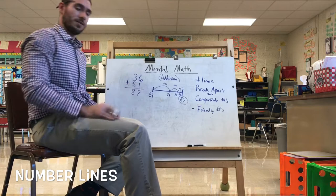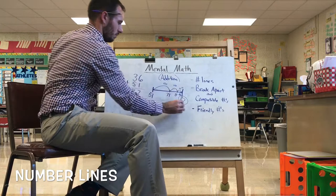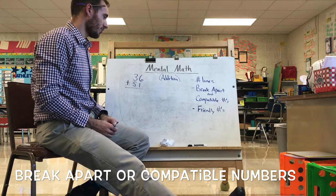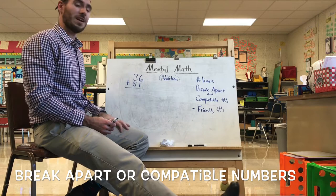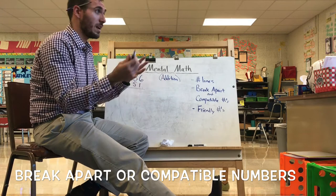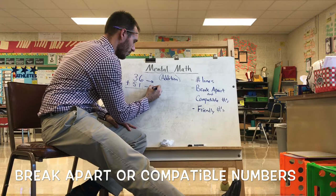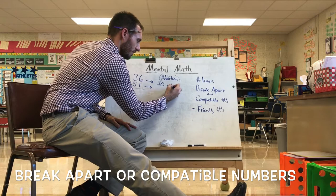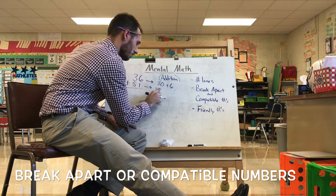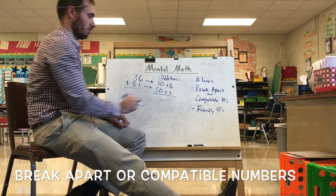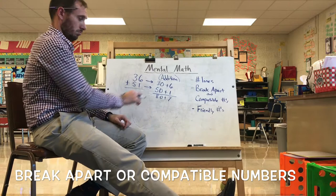Okay, number lines — that's one way to do it. Another mental math strategy is to break apart the numbers, also known as using expanded form. Standard form is when you see the number as you normally would — like 412 or 800,245. When you expand a number, you're breaking it into its different place values. So 36 in expanded form is 30 plus 6. And 51 is 50 plus 1. Now that math can be much faster: I have 6 plus 1 equals 7, and 30 plus 50 equals 80. So 80 plus 7 is 87.